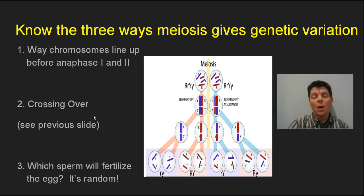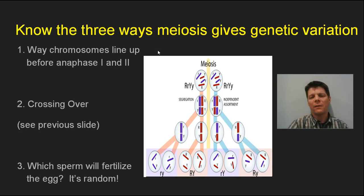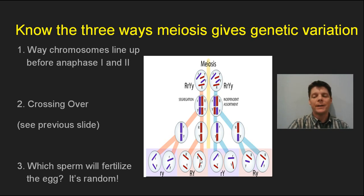In addition to crossing over, there are other ways meiosis leads to genetic variation. One important way is how chromosomes line up before anaphase one and anaphase two. We see here a cell with four chromosomes. One way those chromosomes might line up during metaphase one is blue with blue and red with red, producing certain combinations of chromosomes in the haploid gametes. But the chromosomes could also line up differently — blue here, red here, red here, blue here — leading to different combinations.